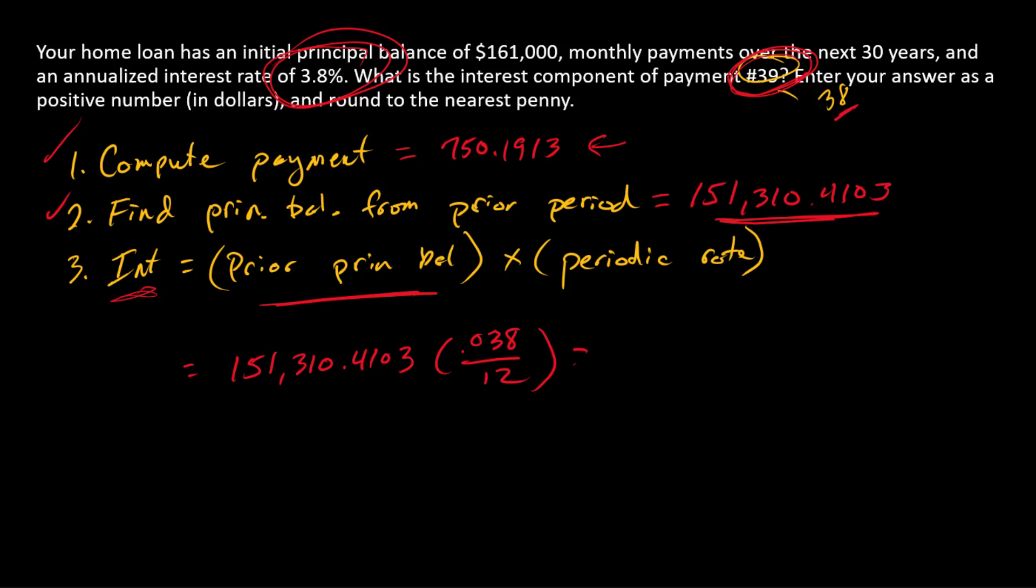And so that is 0.038 divided by 12, the monthly rate.